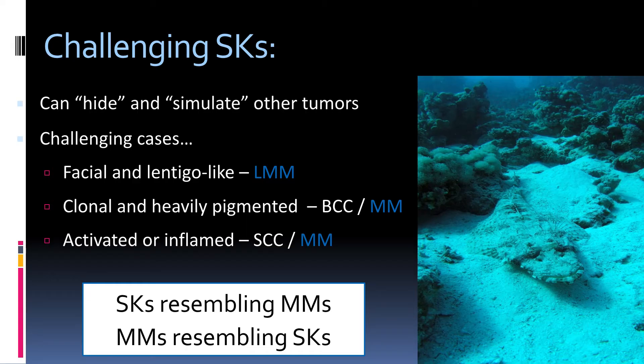So these are the most challenging cases. You must know that seborrheic keratoses can hide and simulate other tumors. Probably the most difficult cases are facial and lentigo-like lesions, because they can look like lentigo maligna, those heavily pigmented or clonal seborrheic keratoses that can resemble BCCs or melanomas, and of course those inflamed or activated seborrheic keratoses that can resemble squamous cell carcinomas or melanomas.